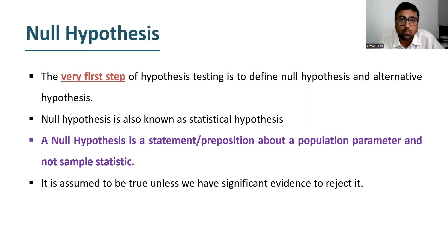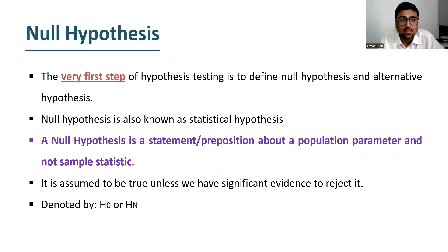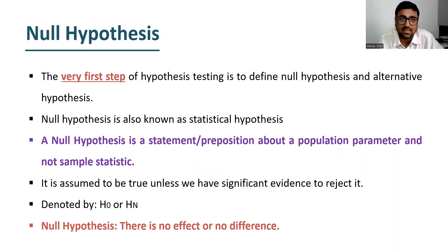So at the end of hypothesis testing, we either reject or we fail to reject. It is assumed to be true unless we have significant evidence to reject it. As I said, it is denoted by H0 or Hn. Null hypothesis says that there is no effect or no difference between population parameter and sample statistic.